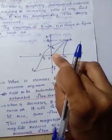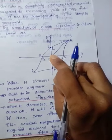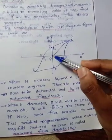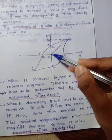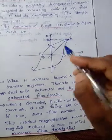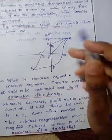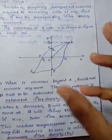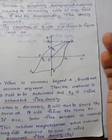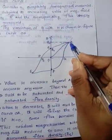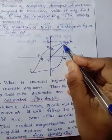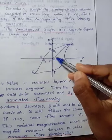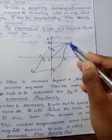Remember, we have applied the magnetic field, so we are going to increase the values. The intensity will increase the strength; automatically we are going to increase the internal field. The O-A curve indicates that B is directly proportional to H. As H increases, B increases, so it will trace the path O to A.